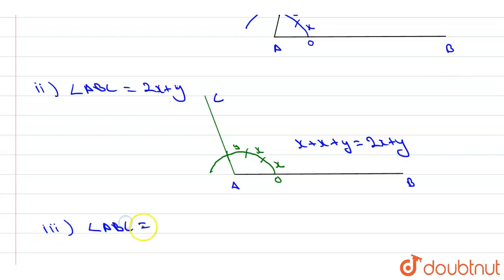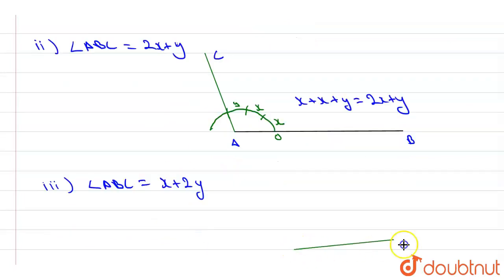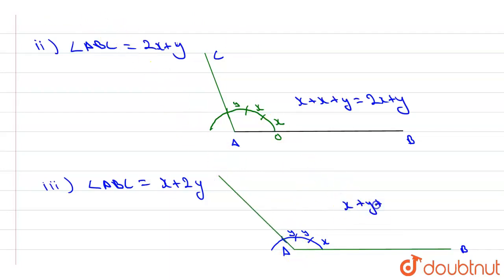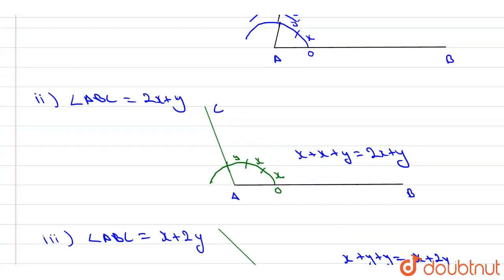For the third angle ABC equal to x plus 2y: take a line AB, from B make an arc of your choice, cut an arc measuring x from the start, then cut an arc measuring y, and from that point cut another arc measuring y again. From the last point of intersection, draw line AC. This gives x plus y plus y, which equals x plus 2y.